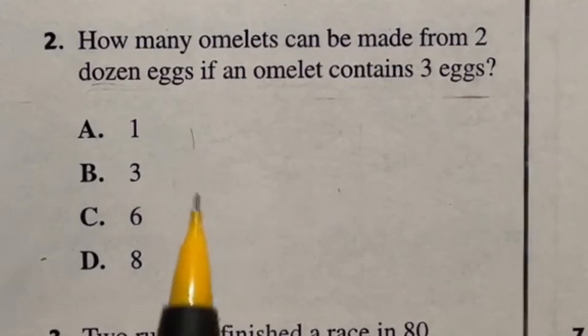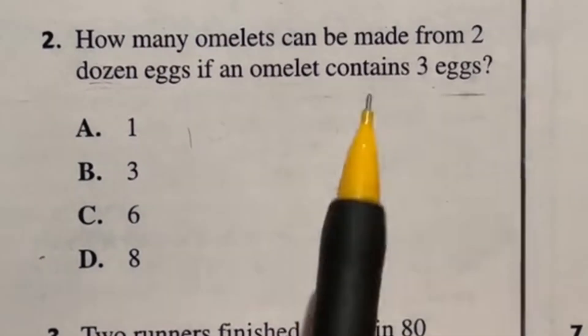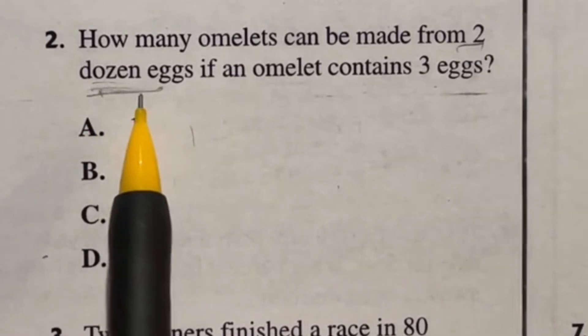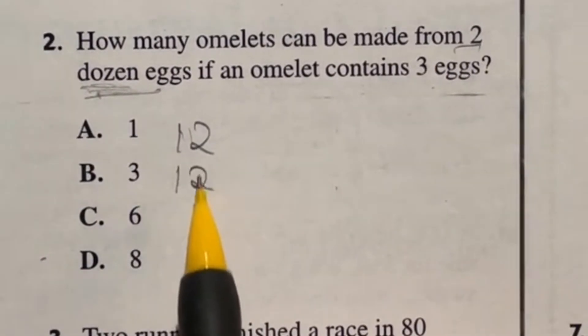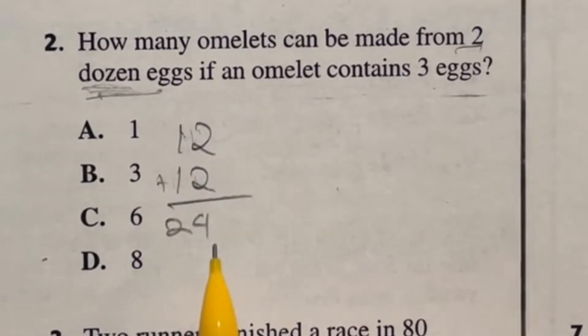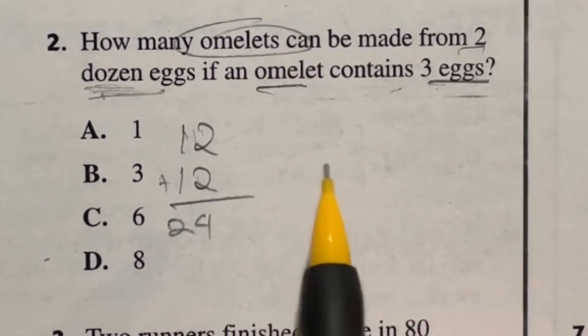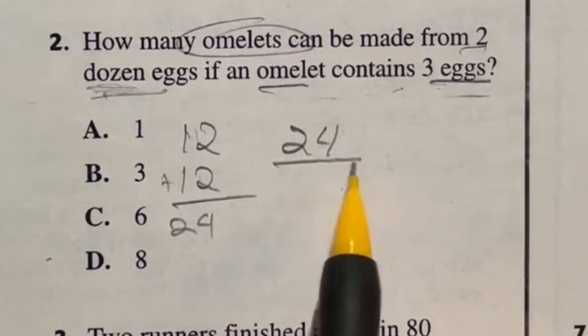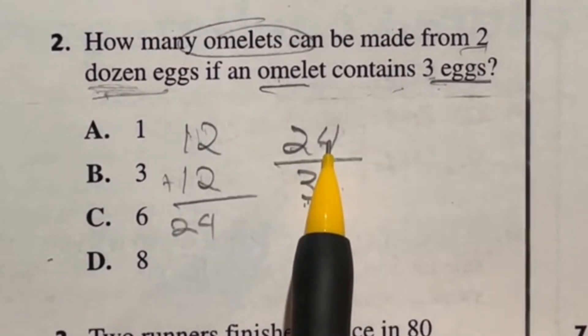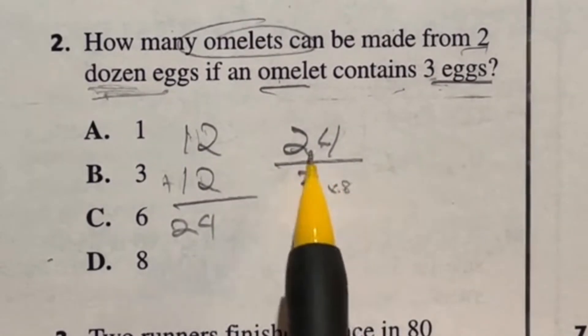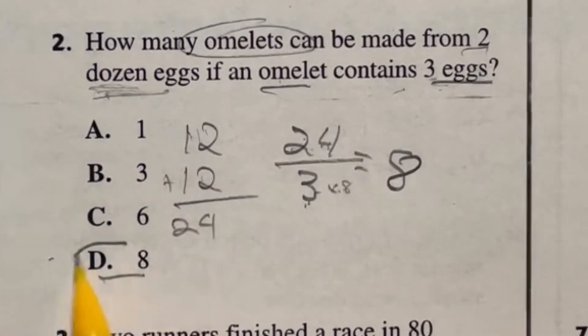Get ready for number two off the ASVAB, which is the military entrance exam. So number two says, how many omelets can be made from two dozen eggs if an omelet contains three eggs? I guess the hard part of this question is knowing what a dozen eggs are. If you don't know what a dozen is, then go buy some eggs. But a dozen means that you have 12 eggs. So if I have two dozen, then I have 12 and 12, two of them. That is going to be a total of 24 eggs. In this case, it says that one omelet contains three eggs. And they want to know how many omelets we can make. If I have 24 eggs and I need to know how many times I can divide that up in the groups of three, because there's three eggs per omelet, then I'm just doing 24 divided by three. If you know your times tables, then three times eight is what gives you that 24. So 24 divided by three is going to give us eight, which means our final answer to this question is D, eight omelets.